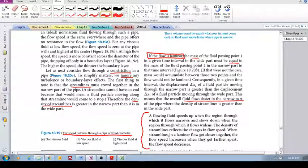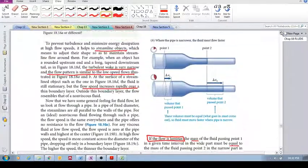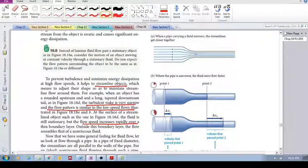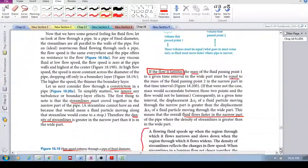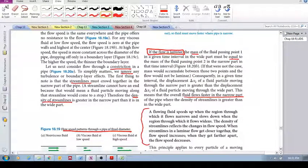When the streamlines in a laminar flow get closer together, the flow speed increases. When the streamlines get farther apart, the flow speed decreases.